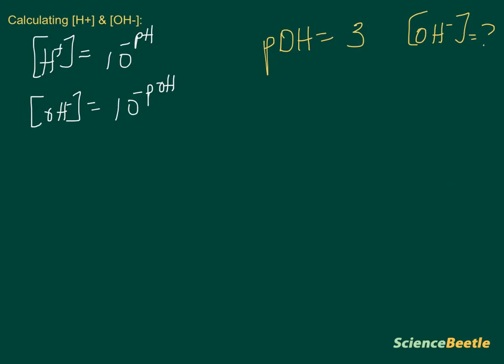Well, in this particular case, if we've got a pOH of 3, our equation then is going to be the following. Hydroxide ion is equal to 10 to the negative pOH. And what this means is that we're going to have 10 to the negative 3, or another way of looking at this would be 1 times 10 to the negative 3. Keep in mind that all of these are going to be molar here and molar there as well.